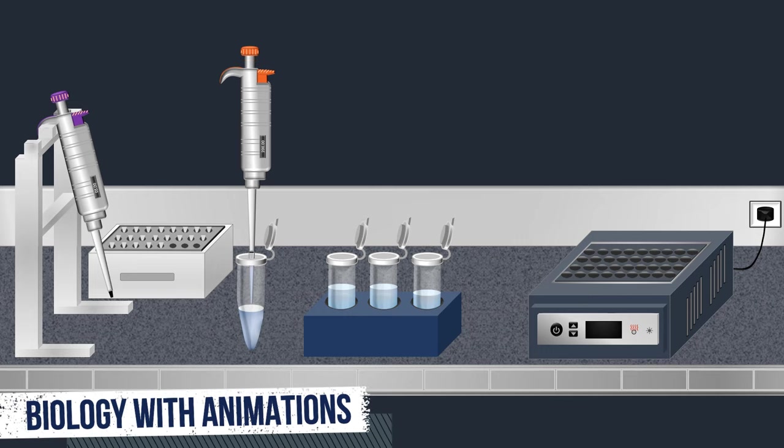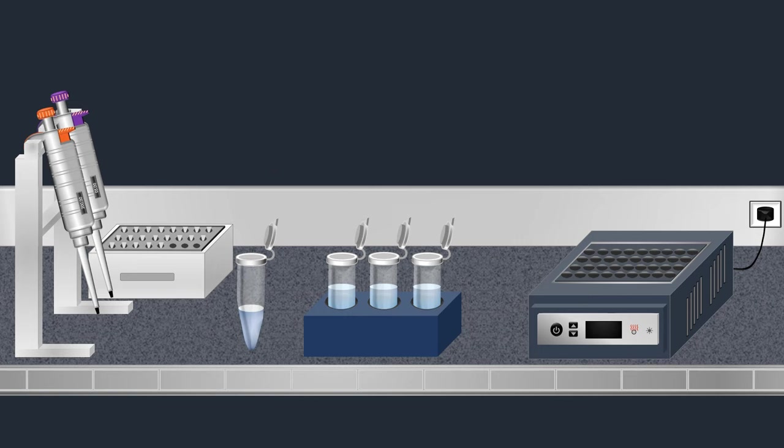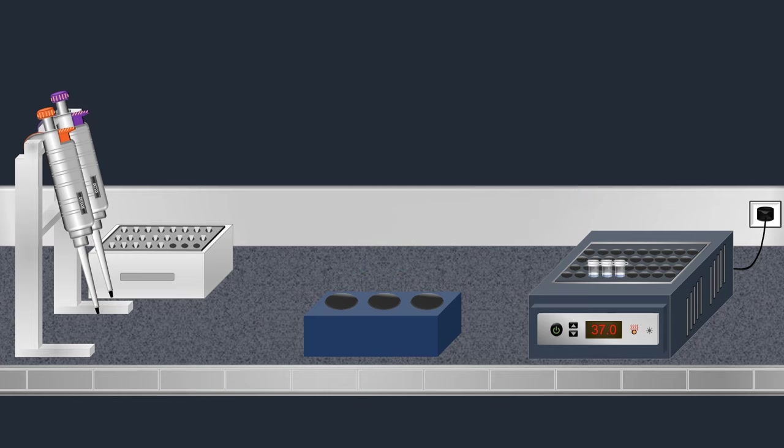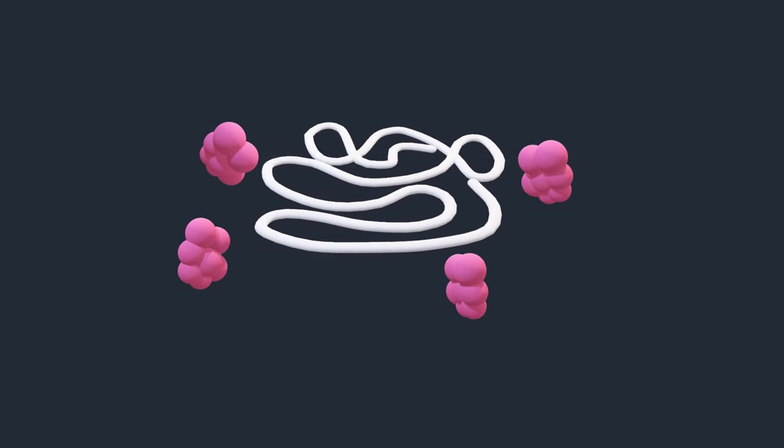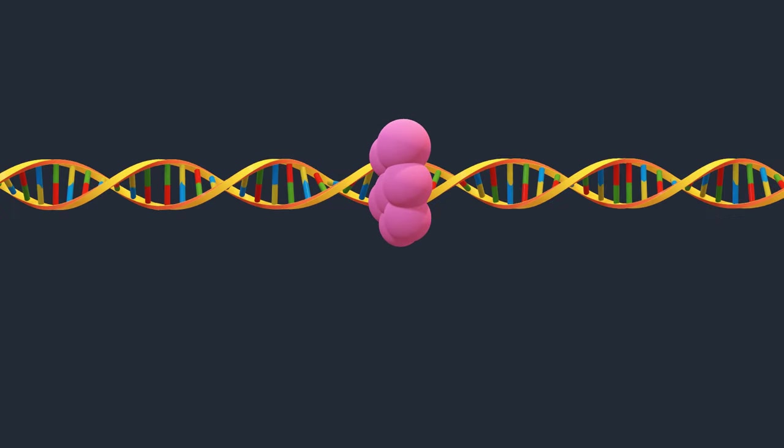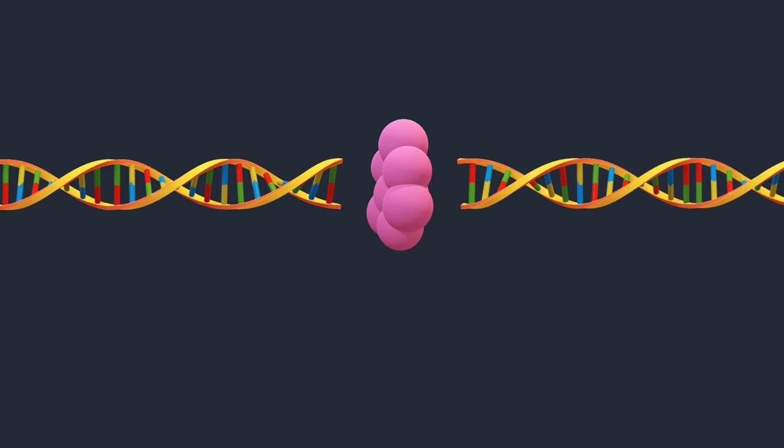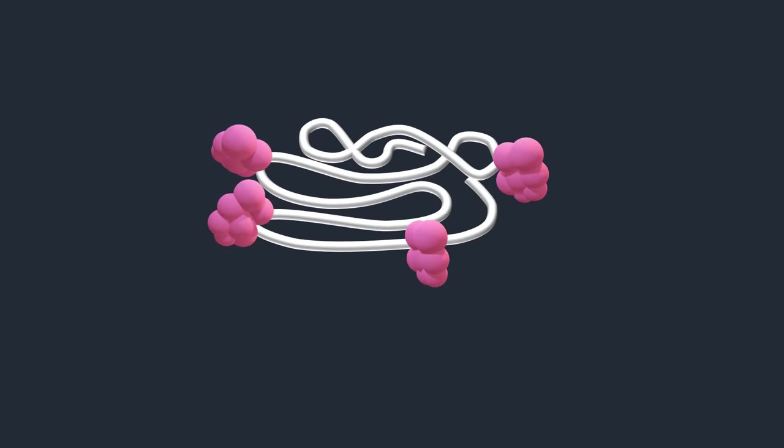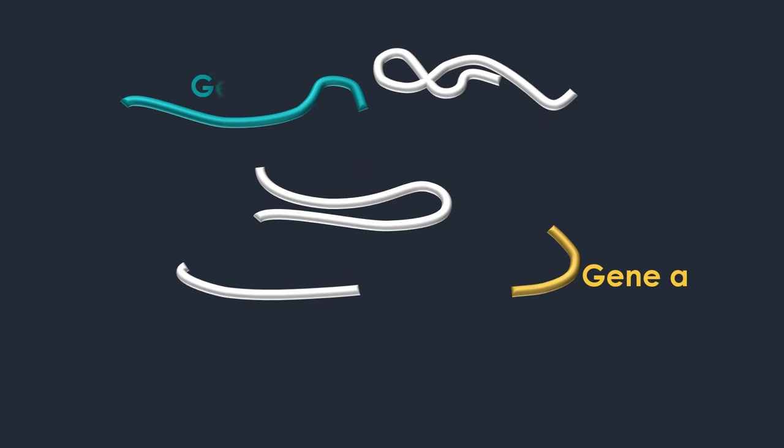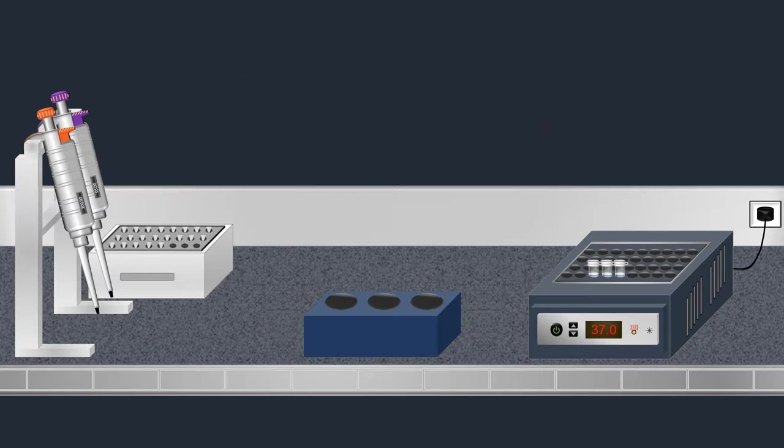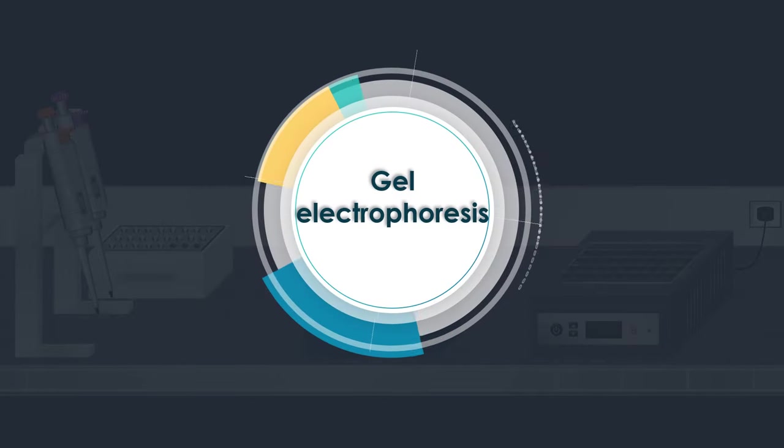Once the restriction enzyme is added, the samples are incubated at 37 degrees Celsius overnight. Restriction enzymes recognize a specific sequence of nucleotides and produce a double-stranded cut in the DNA. Therefore, various DNA fragments of different sizes are obtained. Then the DNA fragments produced by restriction endonuclease digestion are separated by gel electrophoresis.